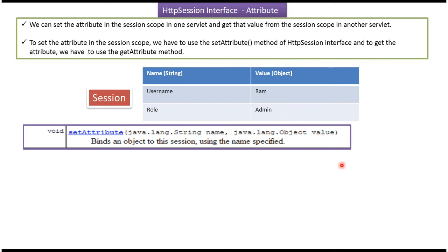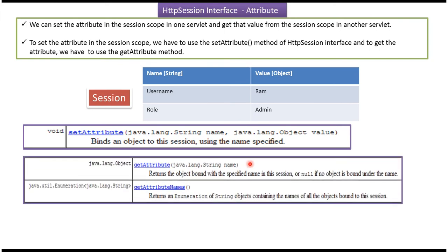To get an attribute value in another servlet, I use the getAttribute method, passing the name, which is the key. For example, if I pass 'username', I will get the value 'rom'. The method returns an Object, so I can type cast to String to get the value 'rom'. Similarly, if I pass 'role' to getAttribute, I will get the string 'admin' after type casting.